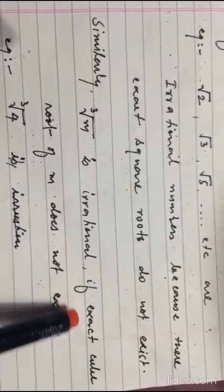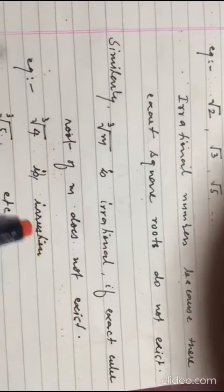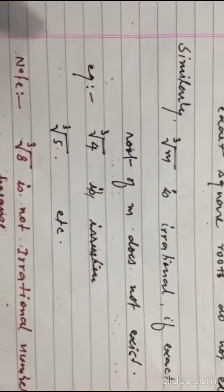Similarly, the cube root of m is irrational if exact cube root of m does not exist. For example, cube root of 4, cube root of 5, etc.